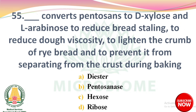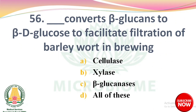Next question: dash converts pentosans to xylose and L-arabinose to reduce dough viscosity, to lighten the crumb of rye bread, and to prevent it from separating from the crust during baking. Options: diester, pentosanase, hexose, ribose. The right answer is Option B: pentosanase.